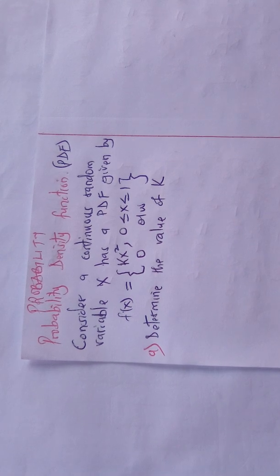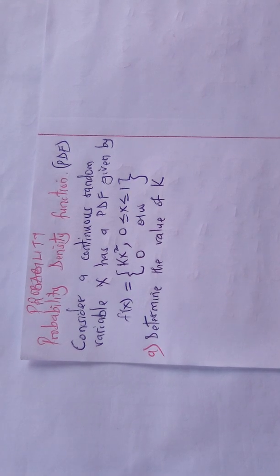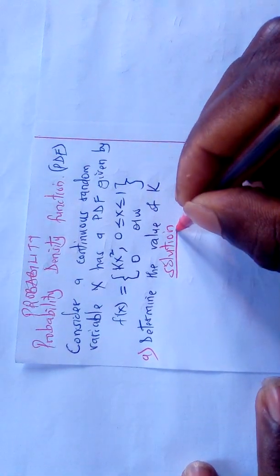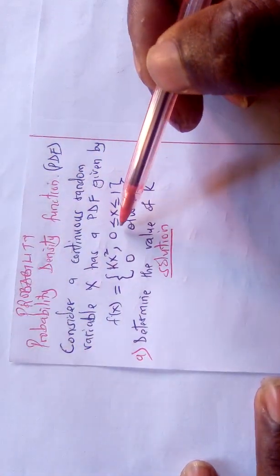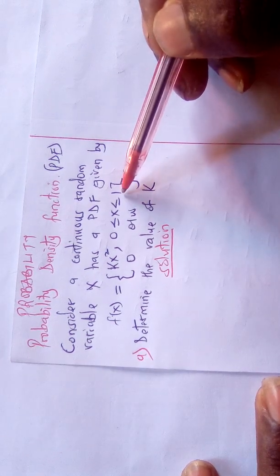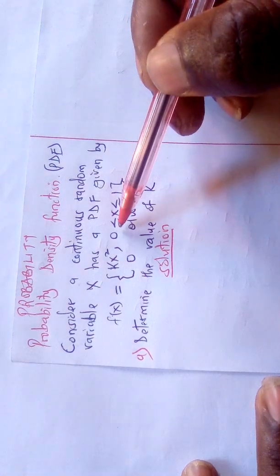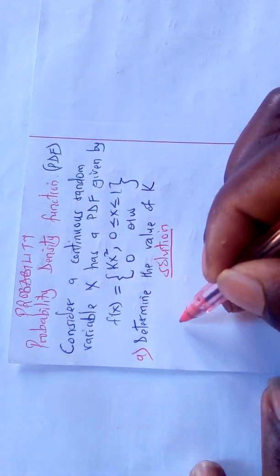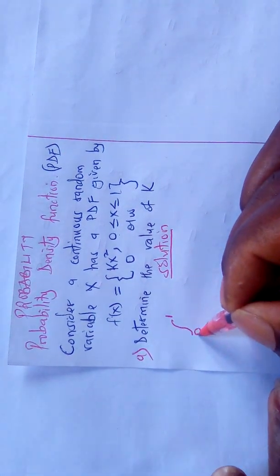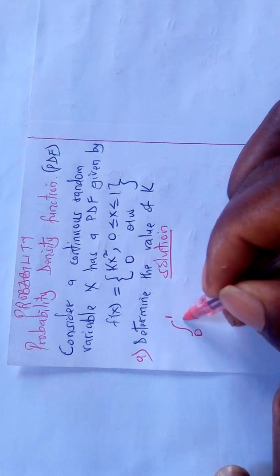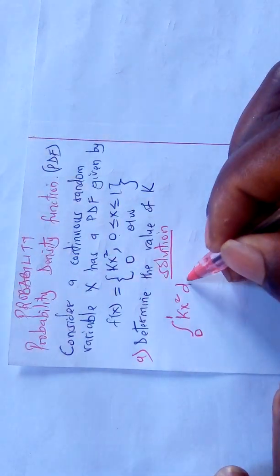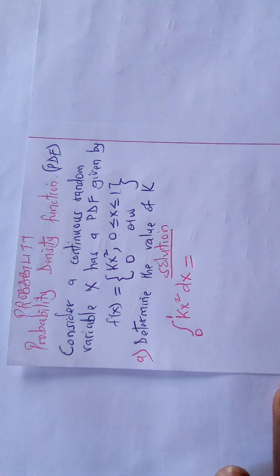Let us look at the solution. Given f(x), the range is 0 ≤ x ≤ 1, which means the upper limit of integration shall be 1 and the lower limit shall be 0. So I put the integration sign with upper limit 1 and lower limit 0, then integrate kx squared dx.